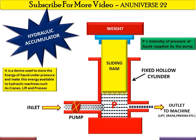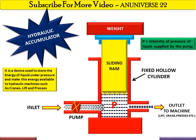When the hydraulic system requires a large amount of pressure energy, the accumulator starts supplying it and the ram moves down. At the outlet there are hydraulic machines such as lifts, cranes, and presses. Particularly when a lift is rising up and a crane is lifting a weight, this large energy is required for a short period, and this is supplied by the accumulator.